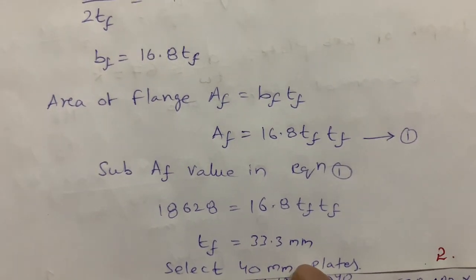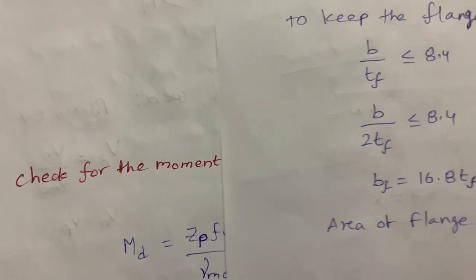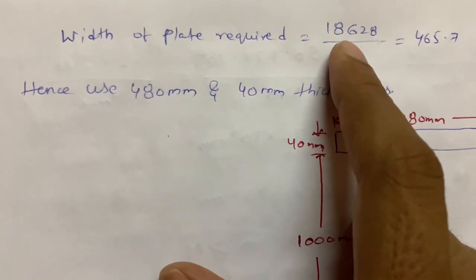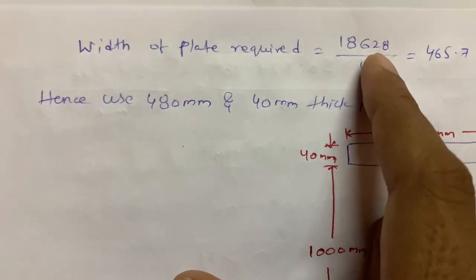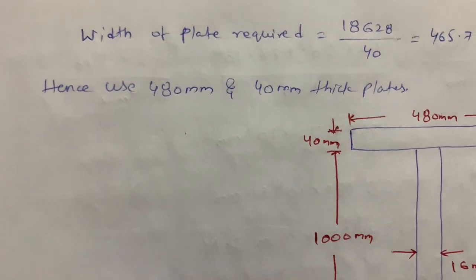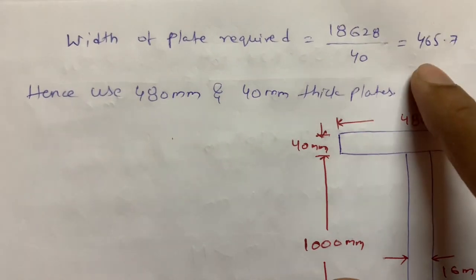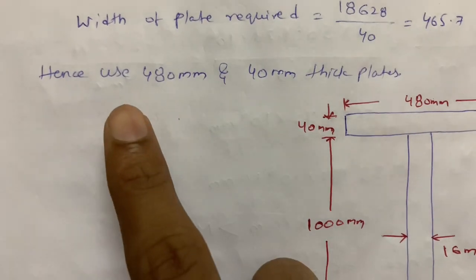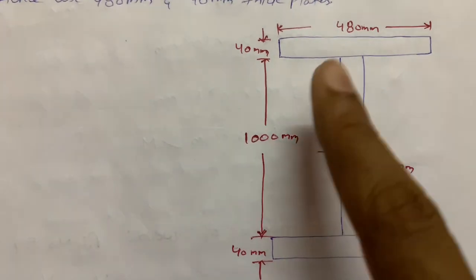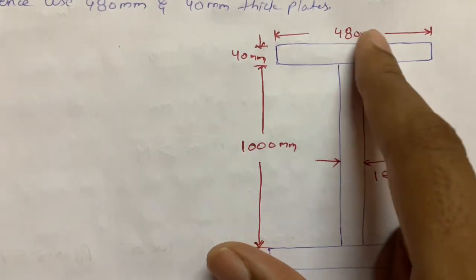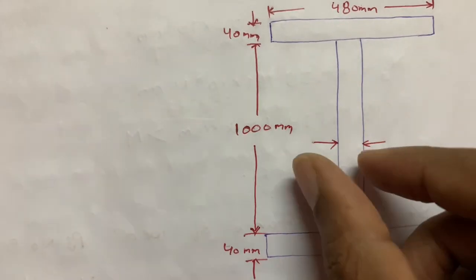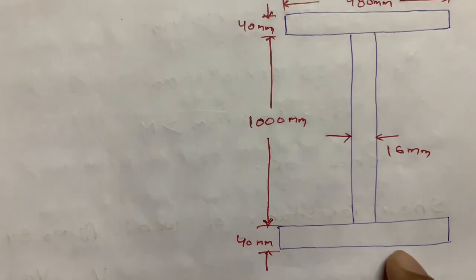With TF = 40 mm, the required flange width BF = AF / TF = 186,028 / 40 = 465.7 mm, taken as 480 mm. So the flange plate selected is 480 mm × 40 mm. The final cross-section is: flanges 480 × 40 mm (top and bottom), web 1000 × 16 mm.